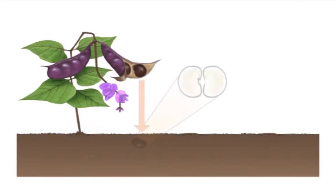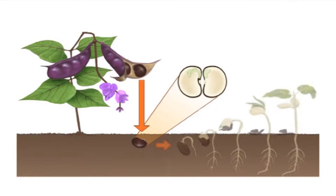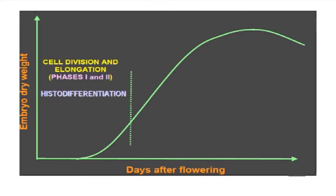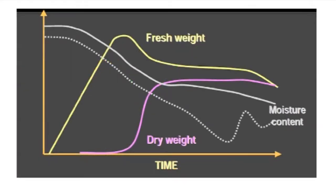Seed maturation happens in phases, and the first phase occurs immediately after fertilization. The stigma dries and withers. The petals follow suit and wither. The surplus adheres to the growing fruit. Hormones present in the seed marshal food from the phloem towards it. As a perfect sink, the seed starts to develop, which is seen by increased cell division. Phase two is also characterized by increased histodifferentiation with high seed moisture content.